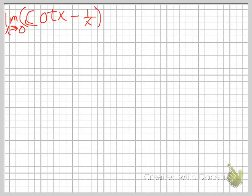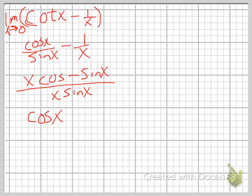We'll find a common denominator. The first thing we're going to do is write cosine x over sine of x, and we end up with x cosine of x minus sine of x over x sine of x.